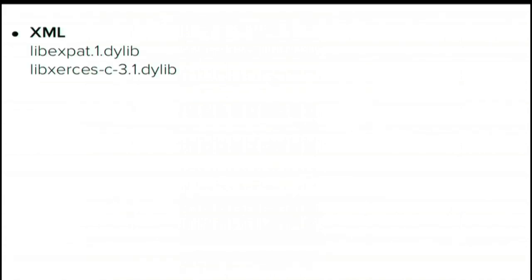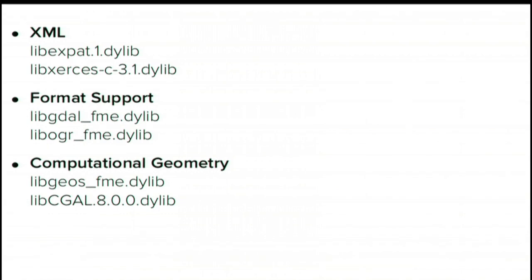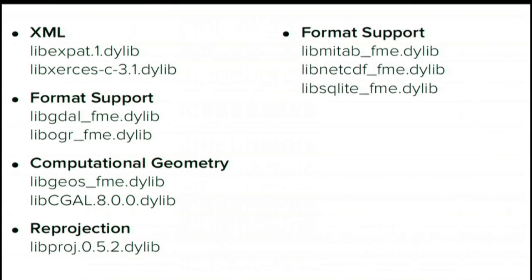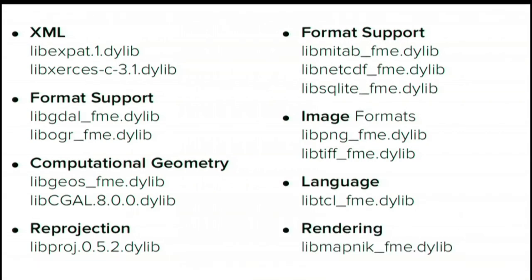Before writing this talk, I downloaded an evaluation copy of the FME, unzipped it, and rooted around in the application folder. I found the following open source libraries in there: XML libraries, format support libraries — GDAL for rasters, OGR for vectors — computational geometry libraries like CGAL and GEOS, data format libraries for MapInfo, NetCDF, and SQLite, image format libraries for PNG and TIFF, a reprojection library Proj4, a language library for Tcl, and a rendering library MapNik for outputting cartography.